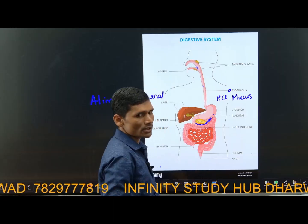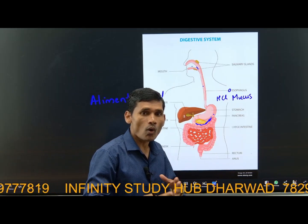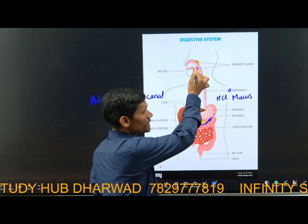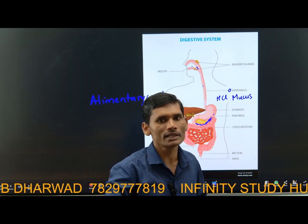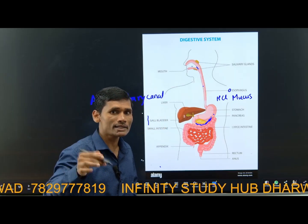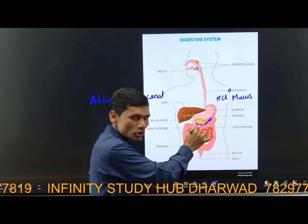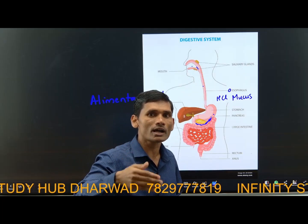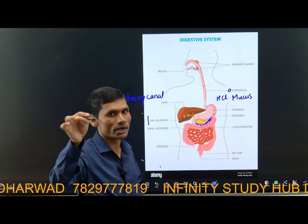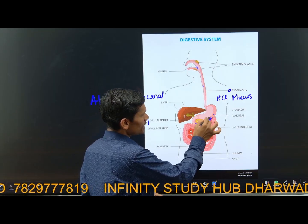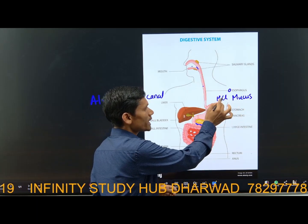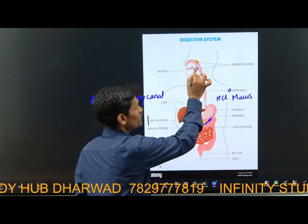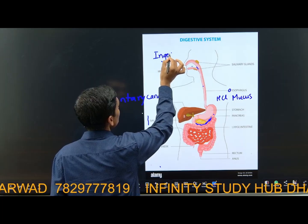HCl, mucus, and pepsin help to digest things in the stomach. In the saliva, one enzyme called salivary amylase helps to digest carbohydrates in the mouth, and digestion continues in the small intestine as well. Salivary amylase breaks down carbohydrates into glucose. Hydrochloric acid kills the microorganisms which enter along with the food. The intake of food — just intake — is called ingestion; this is the first step of nutrition.